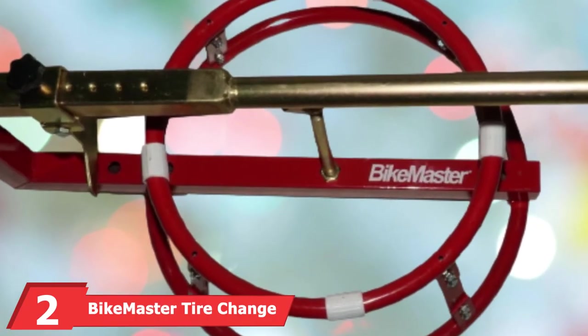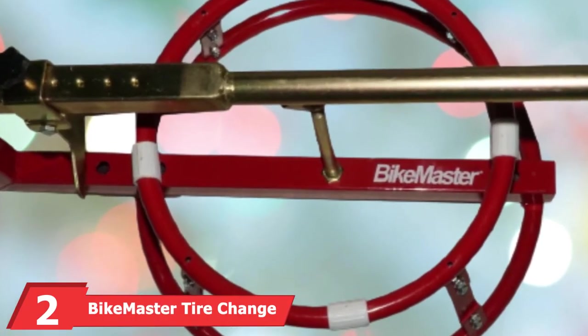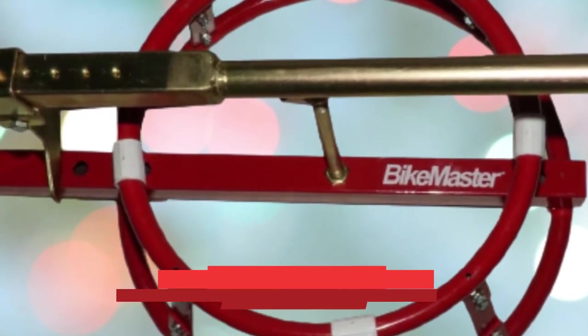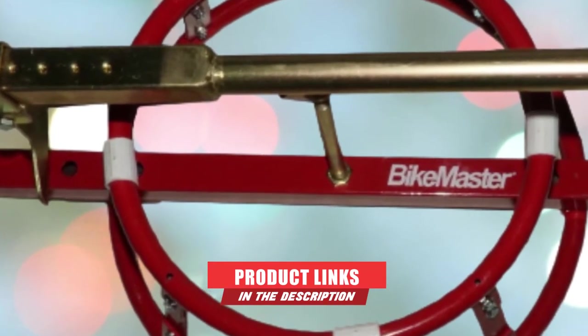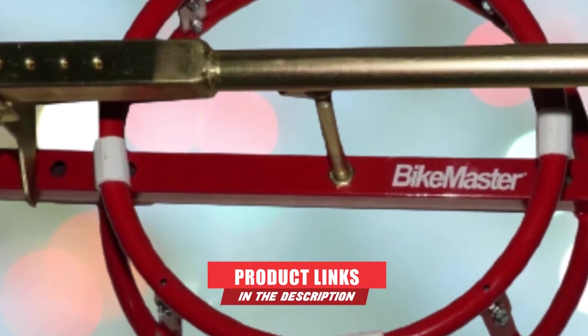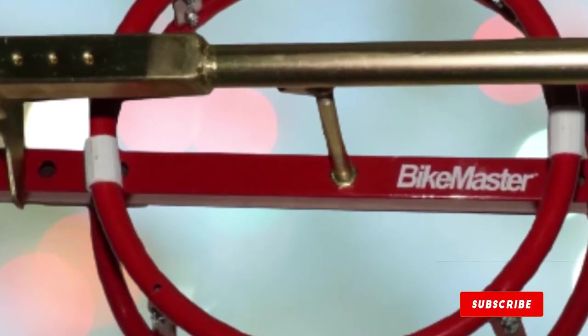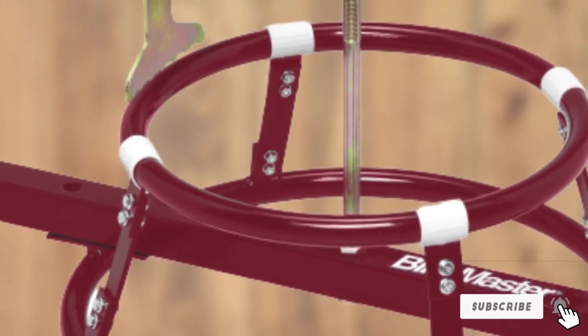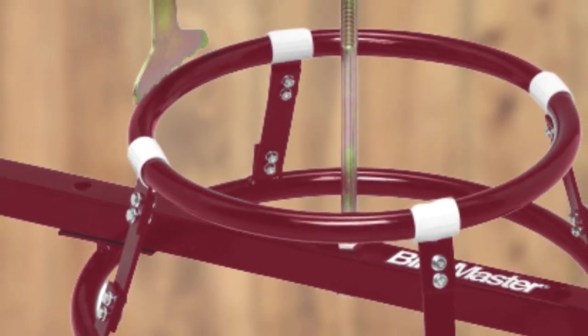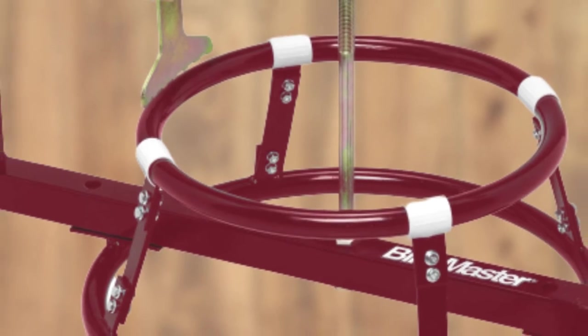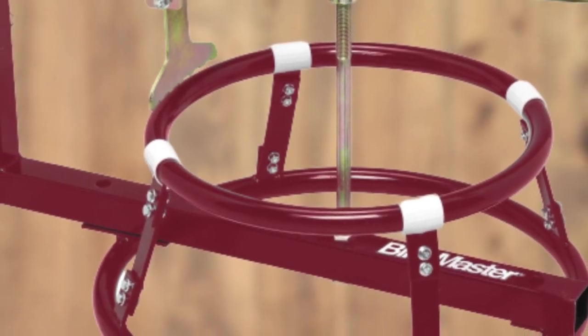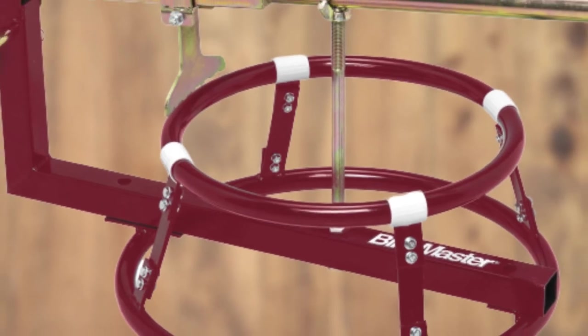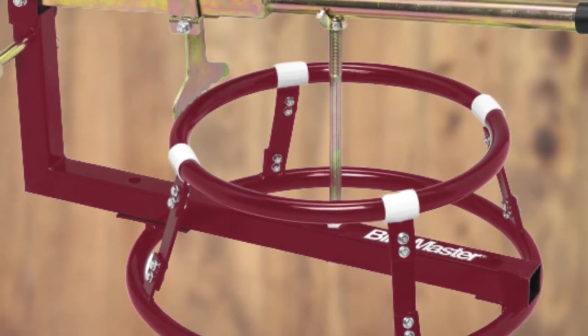Moving on to number 2 with Bike Master Tire Change Stand with Bead Breaker. You don't have to invest a ton of money to get a quality motorcycle tire changer. The Bike Master Tire Change Stand with Bead Breaker is an all-in-one product that makes working with different types of motorcycle tires simple, and it's quite affordable. Made out of durable steel yet lightweight in design, this tire changer is meant to be carried with you.